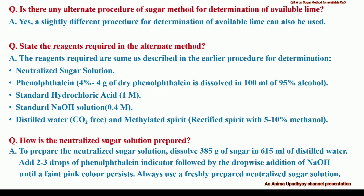Is there any alternate procedure of the sugar method for determination of available lime? Yes, a slightly different procedure can also be used. The reagents required are almost the same as described earlier with slight differences: distilled water free from carbon dioxide, phenolphthalein indicator, a standard solution of hydrochloric acid of 1 molar, standard solution of sodium hydroxide 0.4 molar, and neutralized sugar solution. Also, instead of using rectified spirit, we use methylated spirit.